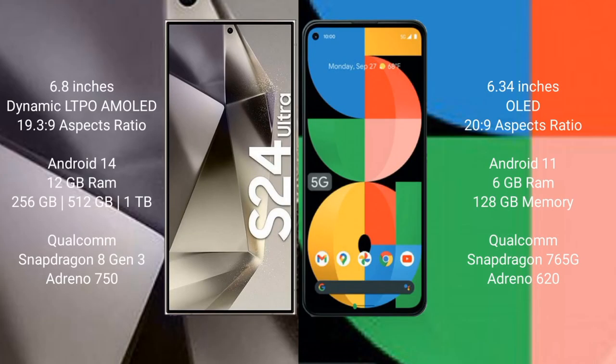The Samsung Galaxy S24 Ultra comes with a 6.8-inch Dynamic LTPO AMOLED display and an aspect ratio of 19.5:9. The Google Pixel 5a comes with a 6.34-inch OLED display and an aspect ratio of 20:9.